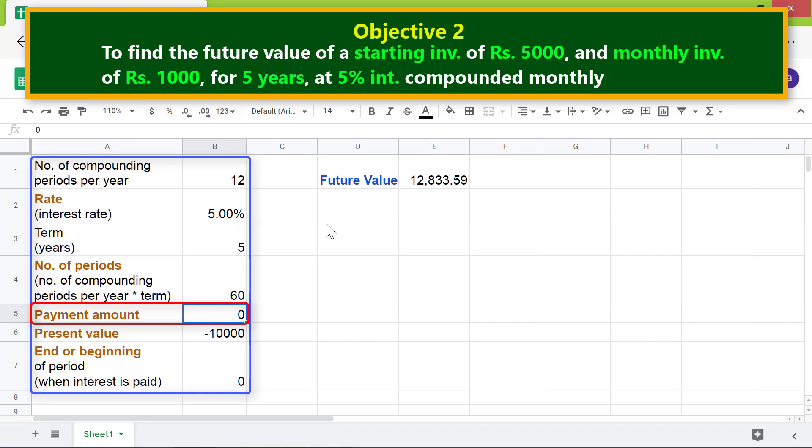Change the payment amount to minus 1,000 and lastly the present value to minus 5,000. Here is the future value of the investments.